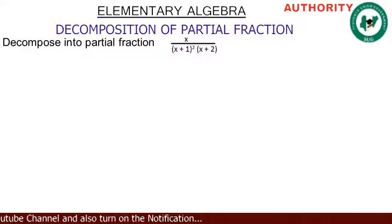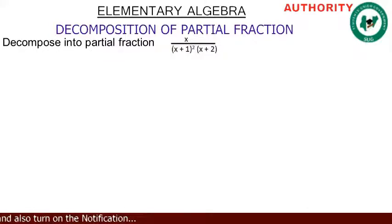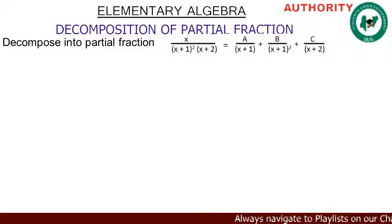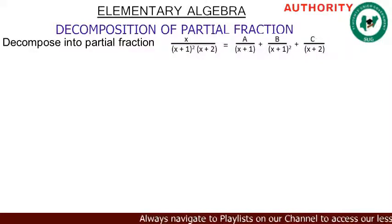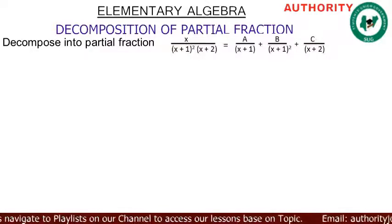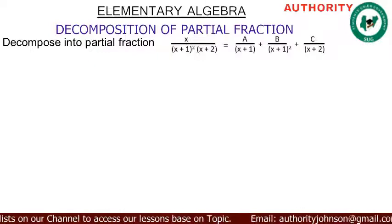Now let's go. We have a situation where we have a squared factor, so when we have a squared factor we are going to split it into two parts. We're going to split it into three terms like this: A over (x+1), plus B over (x+1) squared, plus C over (x+2).